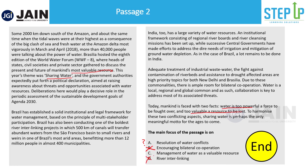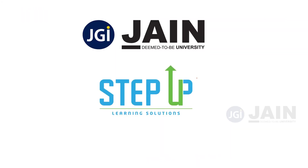Looking at the overall passage, it's not just about resolving a water conflict — at a higher level it's about how water is an important resource that should be managed properly. So option C, management of water as a valuable resource, is the better answer based on scope. I hope you have a good understanding of these high-level questions which check your overall understanding. Don't forget to subscribe, like, and follow our channel. You can also visit our website at www.stepuplearning.net for free resources. Thanks for watching and I look forward to seeing you in the next video.